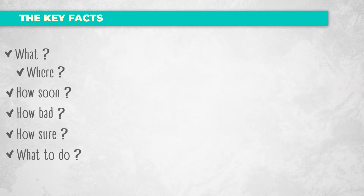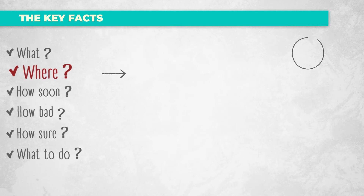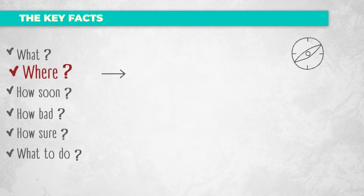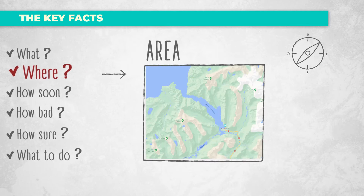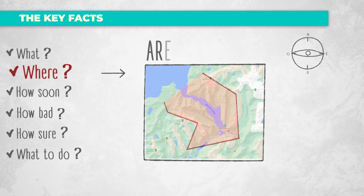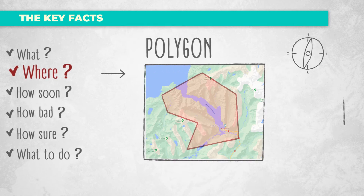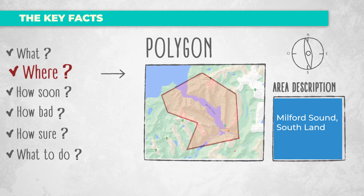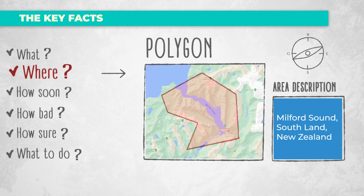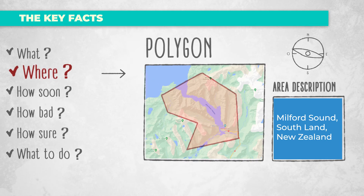It is important for people to know where the emergency is happening. In a CAP message, the affected area can be drawn as a polygon on a map. Additional information on the impacted location can also be included in the Area Description field.